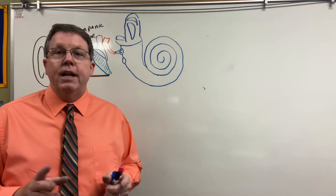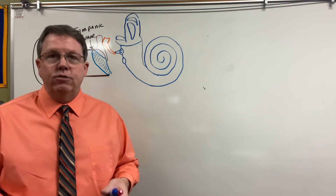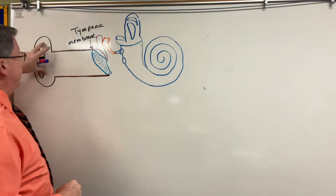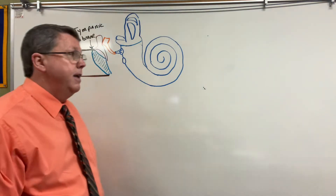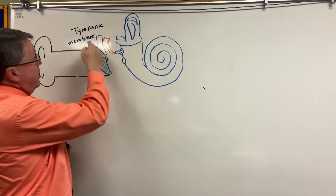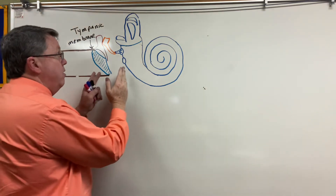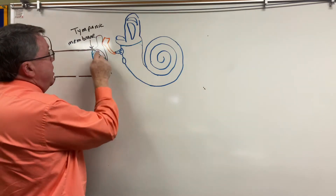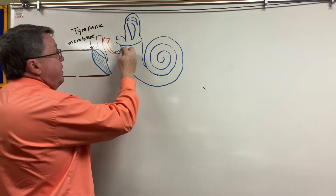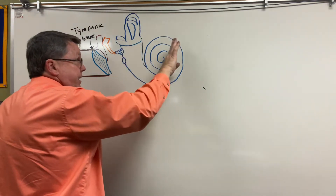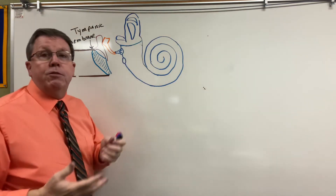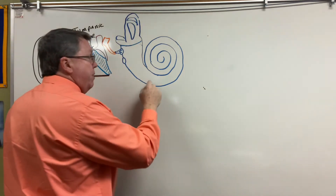Today I'm talking about the inner ear. I've already done videos on the external ear and middle ear, so you may want to watch those first. To review: the auricle or pinna is the external ear, the external acoustic meatus is the ear canal, the tympanic membrane separates the external from the middle ear, and the middle ear contains three bones — the malleus, incus, and stapes. The stapes is attached to the round window. In the inner ear, I have two main parts: the cochlea and the vestibular apparatus, which is responsible for balance.